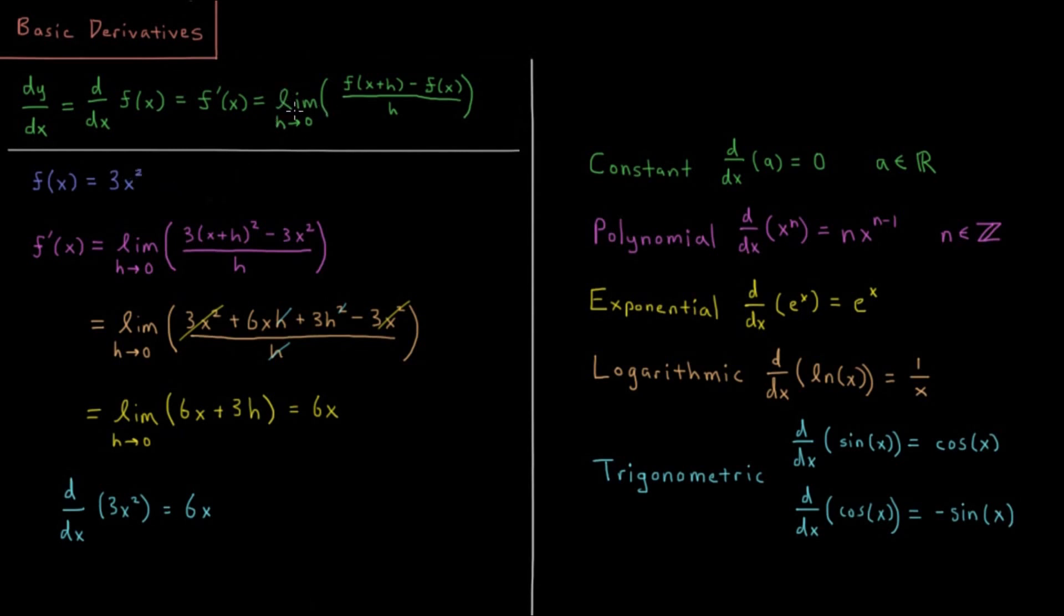So we'd say the limit as h goes to 0 of 3 times x plus h squared, because that's f of x plus h is 3 times x plus h squared, minus 3, or minus f of x, which is 3x squared, divided by h.